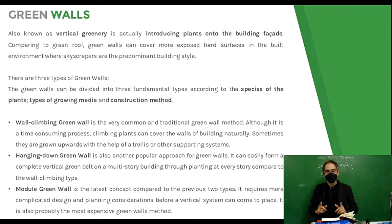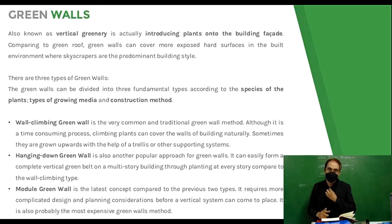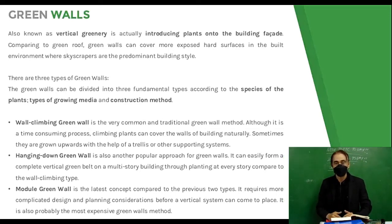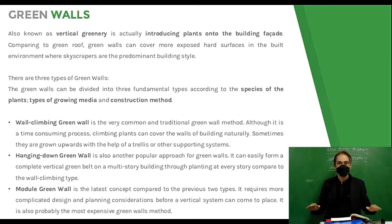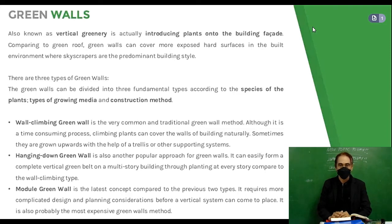Green walls, also known as vertical greenery, involve introducing plants into the building facade. Compared to green roofs, green walls can cover more exposed hard surfaces in the built environment where skyscrapers are the predominant building style. Green walls can be divided into three fundamental types according to the species of plants, types of growing media, and construction method.